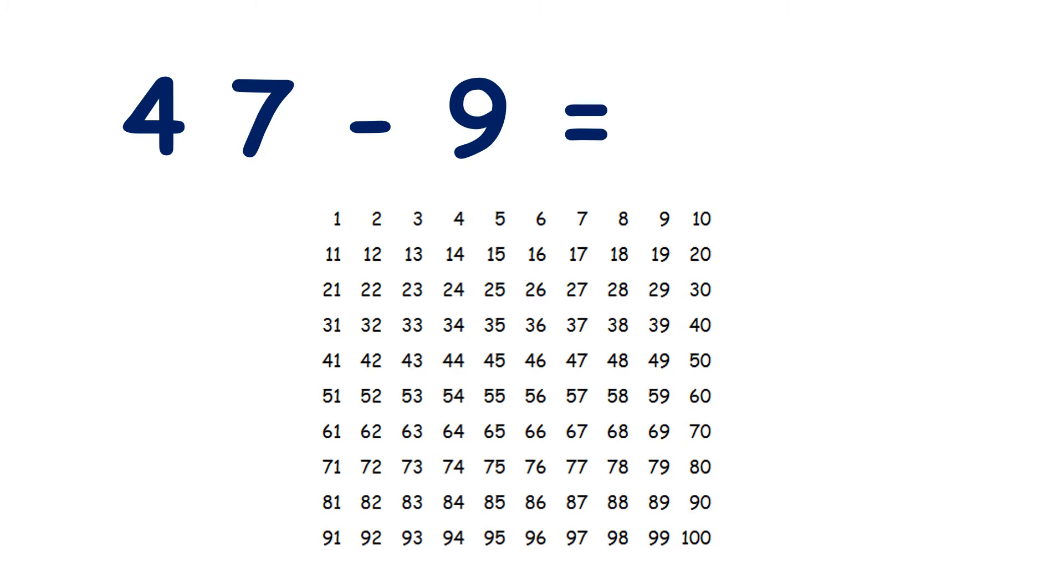Well we can easily subtract 10, but that would be 1 too many, so we need to subtract 10, and then add 1. So if we're on 47, we can subtract 10, add 1, and that gives us 38.